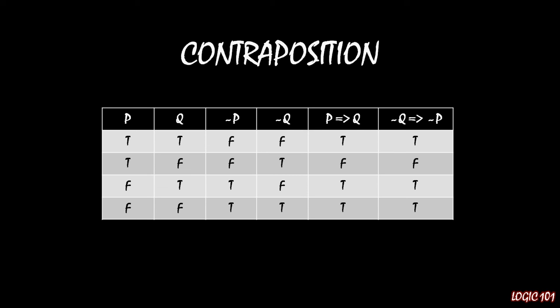The reason that it's true in the first row is because the antecedent is false, so that is vacuously true. For the third row, again, not Q is false, so that statement is vacuously true. And in the last row, both not P and not Q are true, so the implication holds as normal.